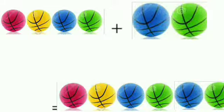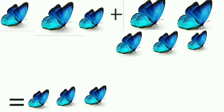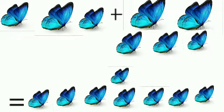Next, look at this picture. Here are 3 butterflies. Here are 5 more butterflies. Ab in ko add kareinge — 3 plus 5 equal to 8. Answer is 8 butterflies.